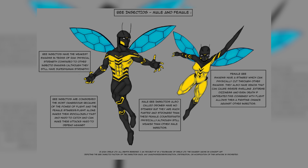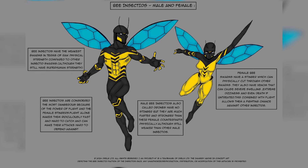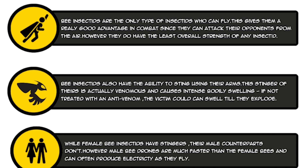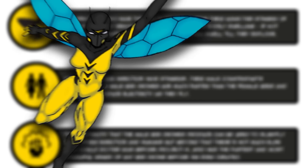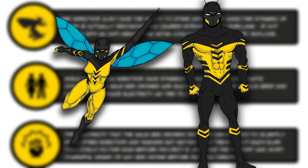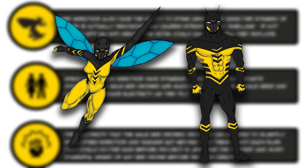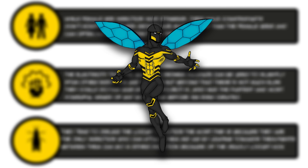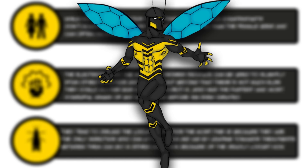Ant insectids can be extremely destructive — you only need 3 to 5 of them combining their strength to punch down an entire skyscraper. Unfortunately they also tend to be the most aggressive and violent; they prefer using threats and often bully other insectids. My main character is part of the bee faction. Bee insectids are the only type who can fly, giving them a great combat advantage. However they have the least overall strength — still much stronger than any average human, but the weakest among insectids. They also have a venomous stinger that can cause massive body swelling, potentially fatal without anti-venom.